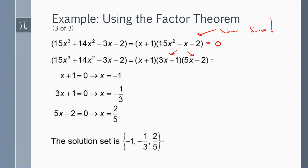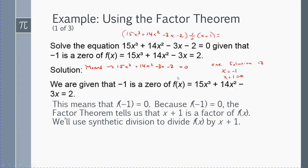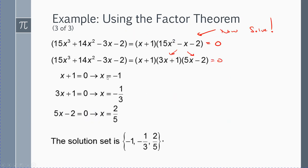Now we have three factors set equal to 0. Setting x plus 1 equal to 0 gives x equals negative 1 — that was given. Setting 3x plus 1 equal to 0 gives x equals negative one-third. Setting 5x minus 2 equal to 0 gives x equals 2 fifths. So there are three solutions to this polynomial equation.